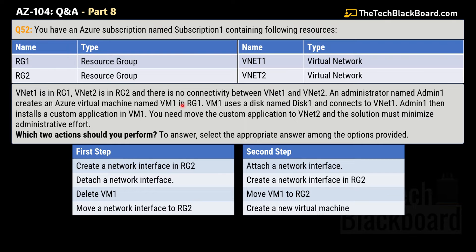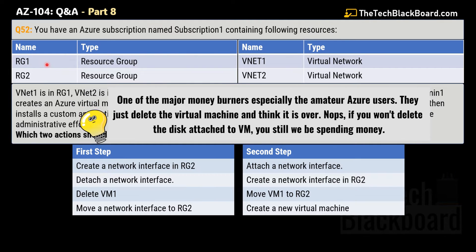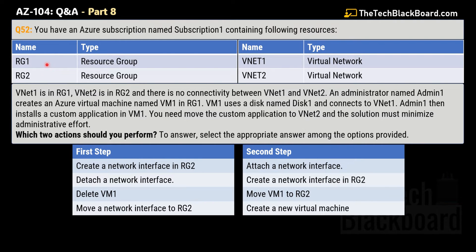First, identify the disk used by VM1, which contains the custom application, and delete the virtual machine itself. A critical point: when you delete a virtual machine, the attached disk is not deleted unless you remove the entire resource group. So after deleting VM1, the disk still exists. You can then create another virtual machine in the target virtual network (vNet2) and attach the original disk containing the custom application to this new VM. This effectively moves the custom application from vNet1 to vNet2.